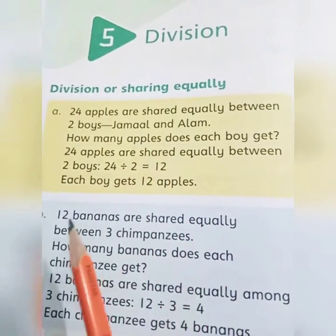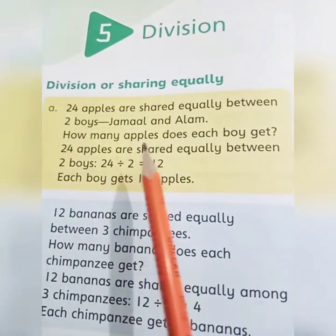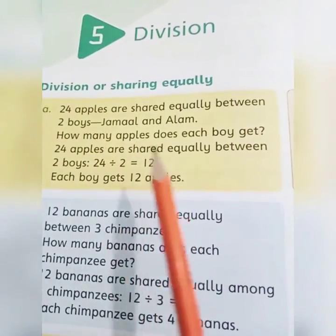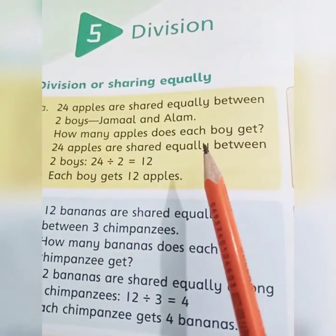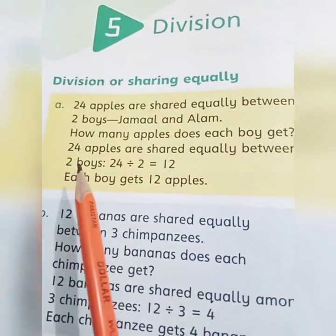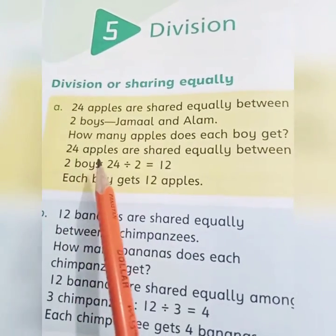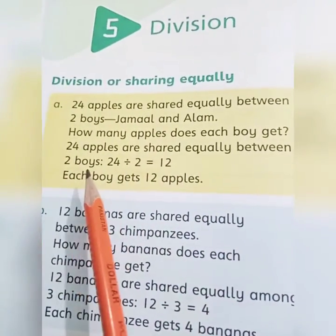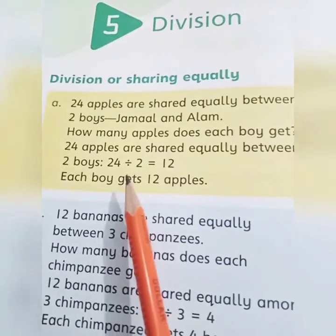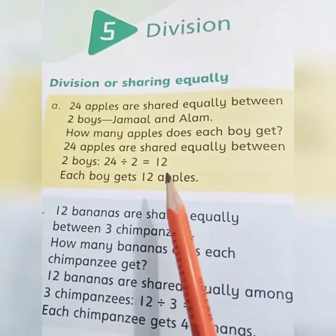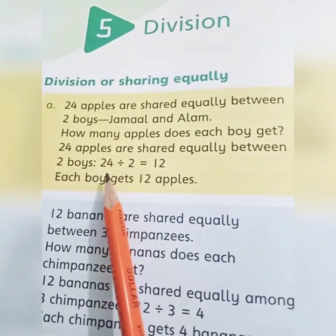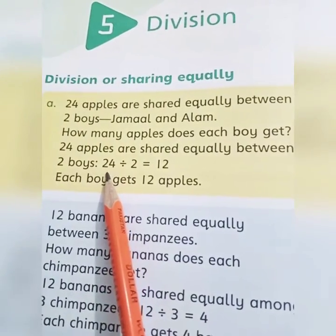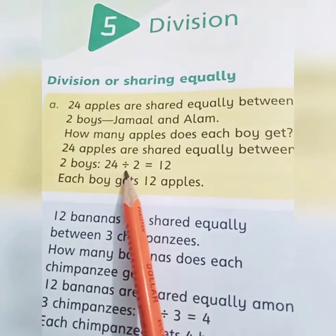24 apples need to be divided between Jamal and Alam so that both get equal apples. How many apples does each boy get? That is what we need to find. Now we will write this in mathematical terms. How many apples do we need to divide? 24. What do we do? Divide.